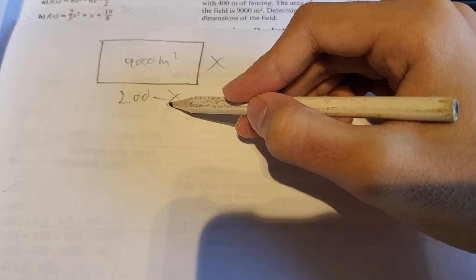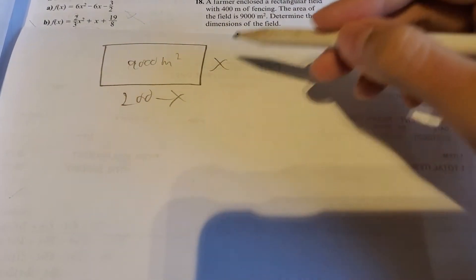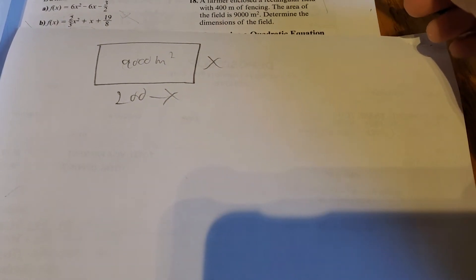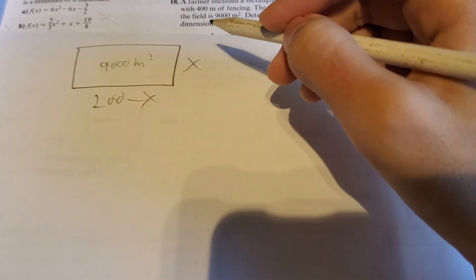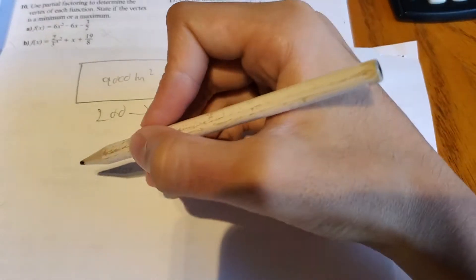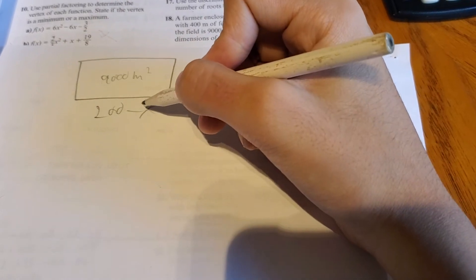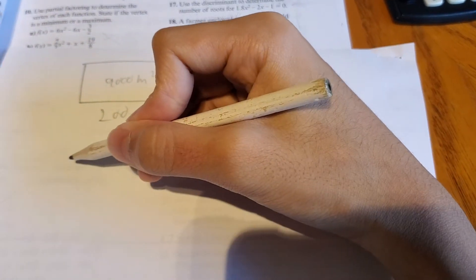Because 200 minus x plus x is 200, which is half of the perimeter. So now let's try to figure out what x is.